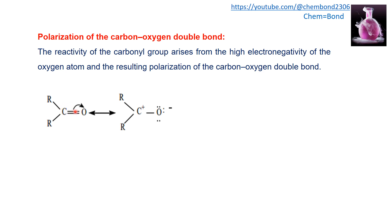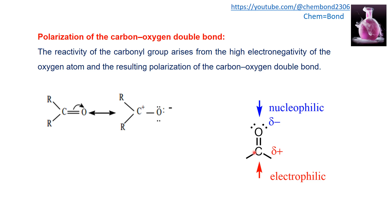The pi electrons shared between the two atoms are shifted slightly towards the oxygen, making the bond polarized. Oxygen becomes the nucleophilic part of the carbonyl group with partial negative charge, while the carbon becomes the electrophilic part with partial positive charge. The electrophilic carbon is susceptible to nucleophilic attack, since a nucleophile — being nucleus-loving — is attracted toward the carbon bearing the positive charge.